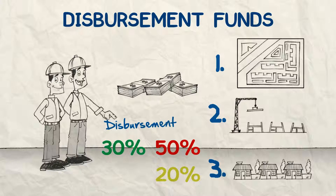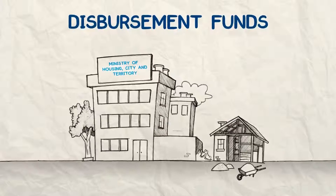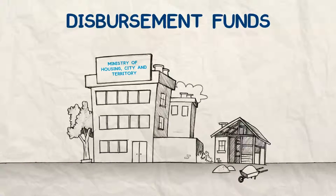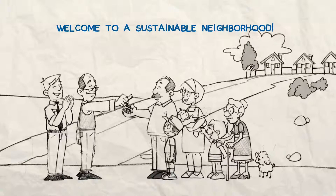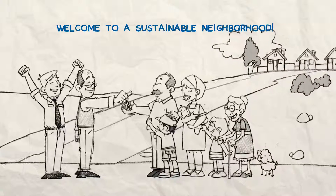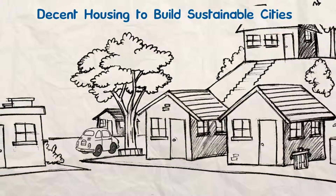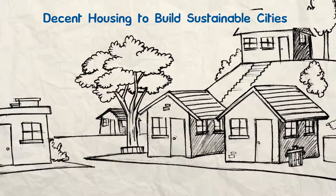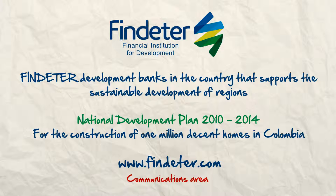Or a second option: you can manage the implementation of the project with the Ministry of Housing, City, and Territory, and have the houses and their keys on hand for them to be given to the poorest families of your municipality, fulfilling their dream, so they can say: now I have the house I've always wanted, that you promised you'd give us. Findeter is the development bank in Colombia that supports the sustainable development of regions.